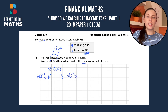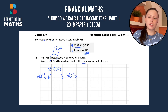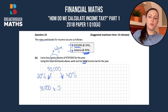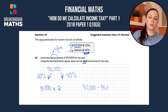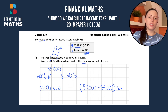We know $35,000 is going to be taxed at 20%, so we'll have $35,000 multiplied by 0.2. Then the other part will be the balance, which is at 40%. The balance is going to be $50,000 minus $35,000, because we've already taxed $35,000 of it, and that's going to be multiplied by 0.4.